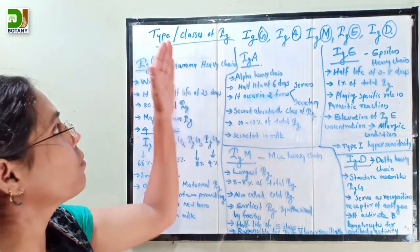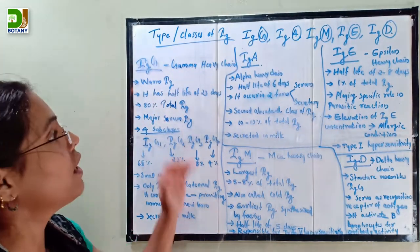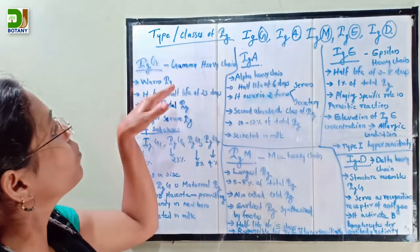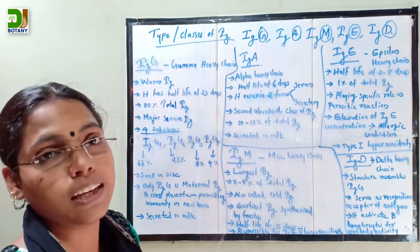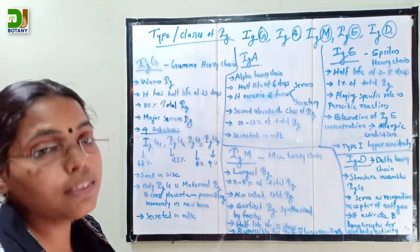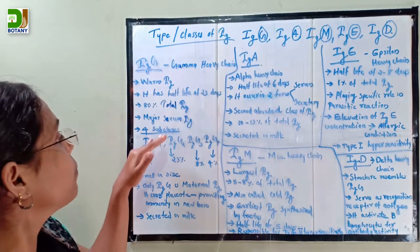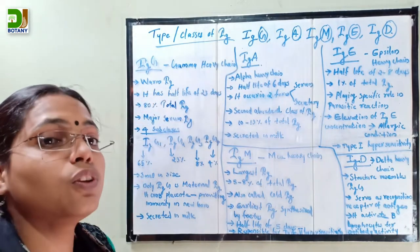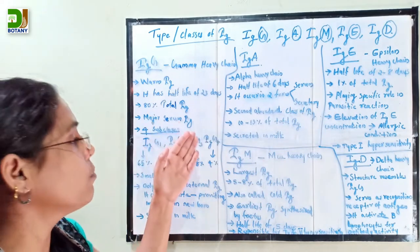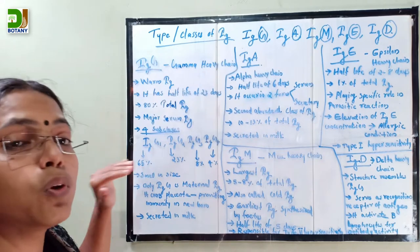First we discuss immunoglobulin G. Immunoglobulin G contains gamma heavy chains and is also known as warm immunoglobulin. The half-life of immunoglobulin G is 23 days. It makes up 80% of total immunoglobulin, making it the major serum immunoglobulin. Immunoglobulin G is divided into four subclasses: IgG1, IgG2, IgG3, and IgG4.